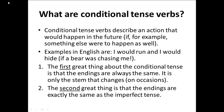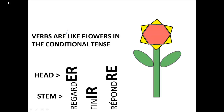The first great thing about the conditional tense is that the endings are always the same. It is only the stem that changes, on occasions. The second great thing is that the endings are exactly the same as the imperfect tense. Think of this useful analogy: verbs are not like flowers in the conditional tense.